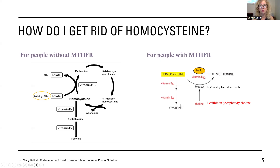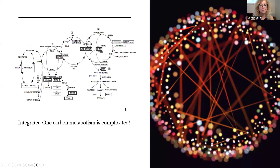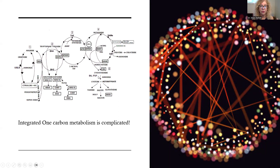So for people with MTHFR, I can get rid of homocysteine by either using methyl B12 — not cyanocobalamin, and not methyl folic acid (we don't have that step, that's not possible for us) — or we can use betaine from beets or choline, or we must have enough vitamin B6 without drug-induced nutrient depletion to make cysteine. Any of those things will get rid of the homocysteine. So: vitamin B6, methyl B12, and betaine from lecithin.